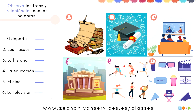Por ejemplo, número uno — el deporte. ¿Qué letra es? La A, la B, la C — ¿qué letra? If you've done it already, vamos a decirlo: el deporte es la letra E. Muy bien. And los museos — ¿qué letra? La F. Muy bien. If you want, you can put your answers in the comments below and I can check them for you.